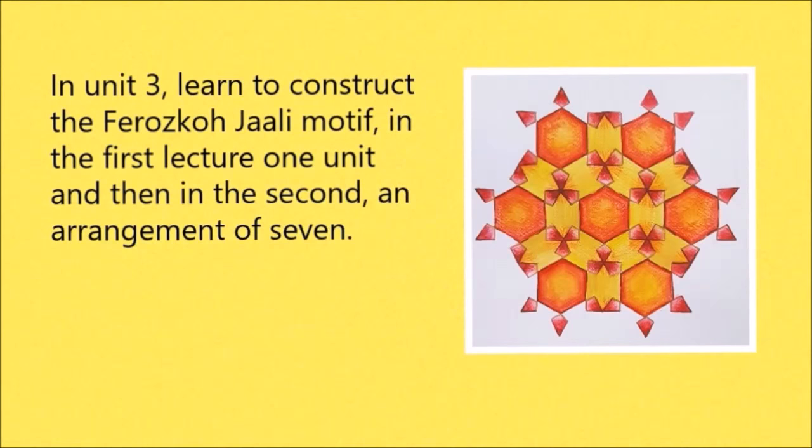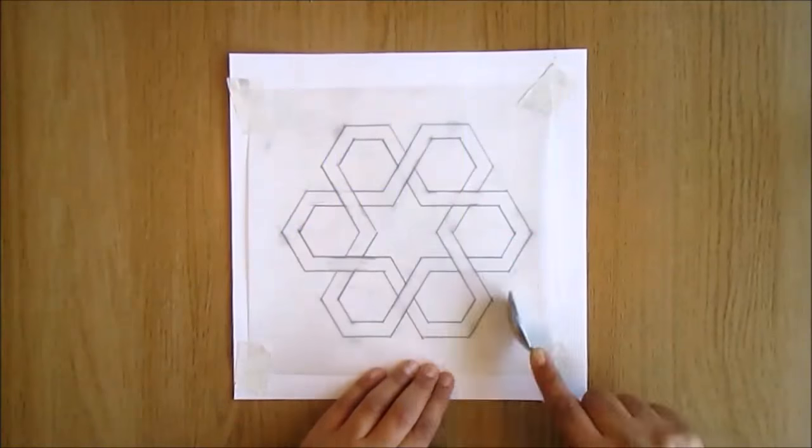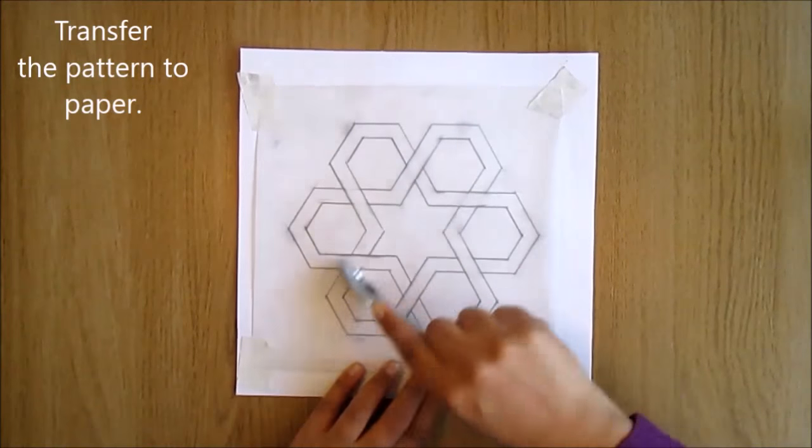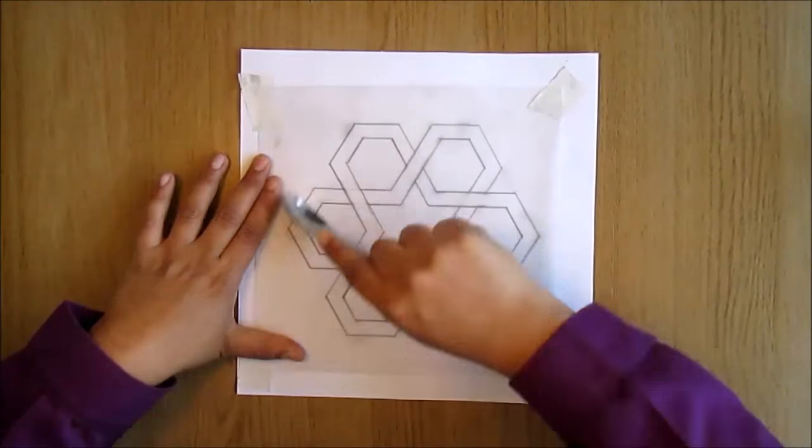In Unit 3, learn to construct the Faroz Kodjali motif. In the first lecture, one unit, and then in the second, an arrangement of seven. You'll also see how to transfer the pattern to paper, or maybe canvas, or whichever other surface of your choice.